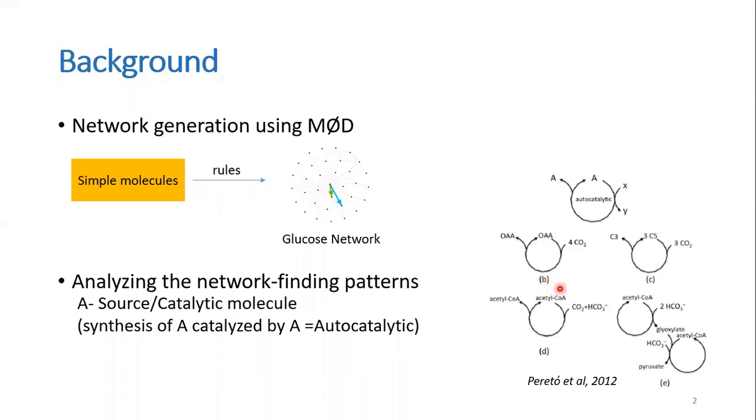Here's a depiction of what one looks like. The source of the catalytic node of the cycle, that is A, can get synthesized again in its own reaction by using a feeder molecule X. This pattern can be found in cycles for carbon fixation like the RTCA cycle or the C3 cycle in plants, wherein they use CO2 as the feeder to regenerate the source.